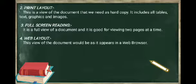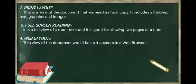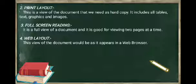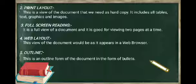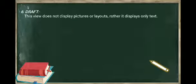Web layout - this view of the document would be as it appears in a web browser. Outline - this is an outline form of the document in the form of bullets. And final document view is draft. This view does not display pictures or layouts, rather it displays only text.